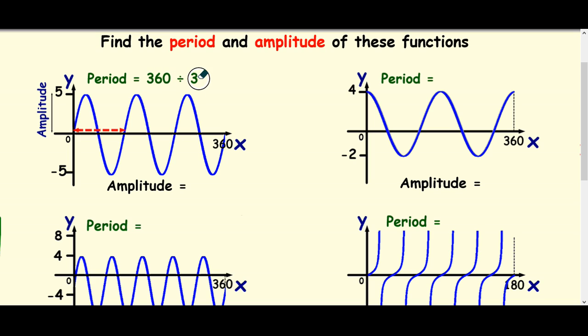So the period's 360 divided by 3. So it's 120 degrees. There it is there. One full cycle of a wave before it starts to repeat.